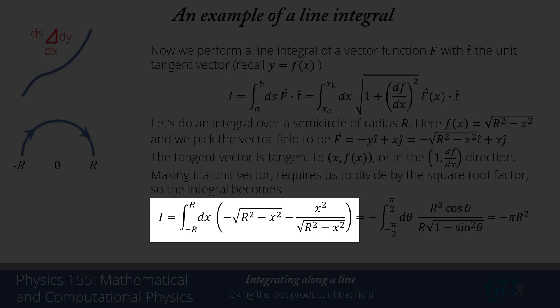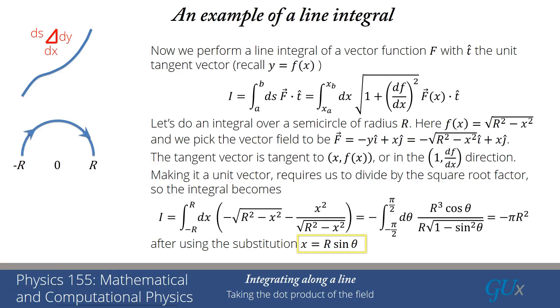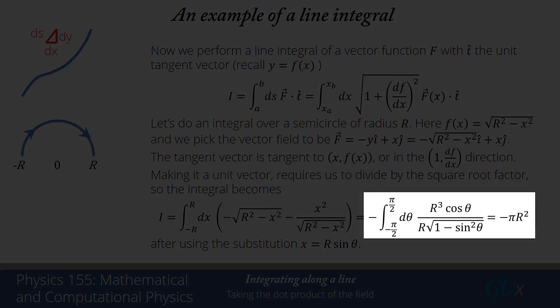We can simplify by putting everything over the same common denominator: we get minus r² plus x² minus x², leaving minus r² over the square root of r² minus x². Now we apply the same trig substitution: x equals r sine theta, dx equals r cos theta d theta, integral from minus pi over 2 to pi over 2. In the numerator, r² times r cos theta gives r³ cos theta. The denominator is r times cosine theta. Those cosines cancel, and I'm left with the integral from minus pi over 2 to pi over 2 of minus r² d theta. That integral gives pi, so the result is minus pi r².